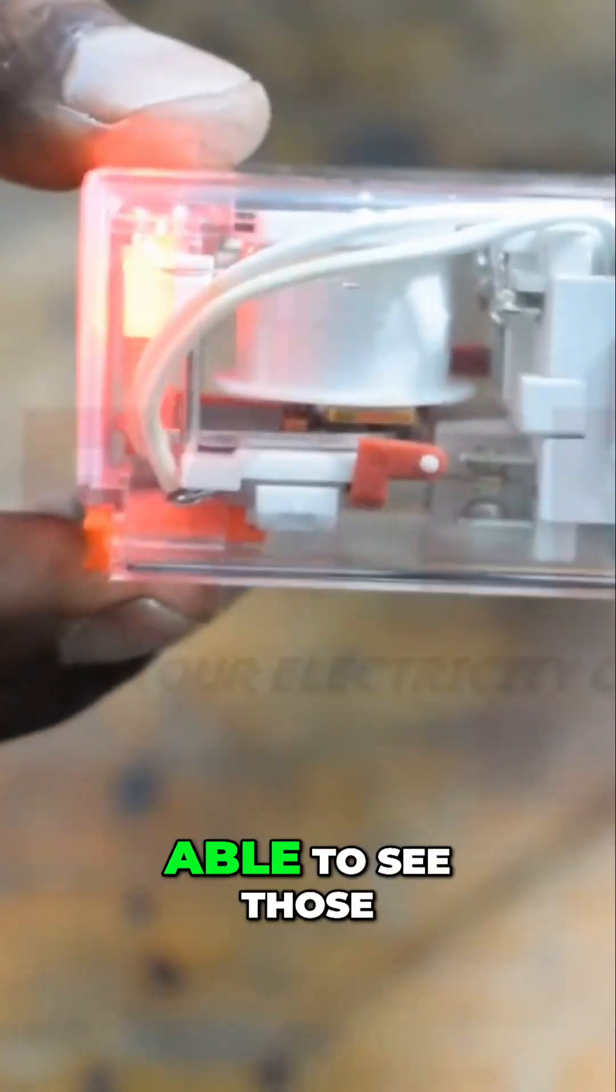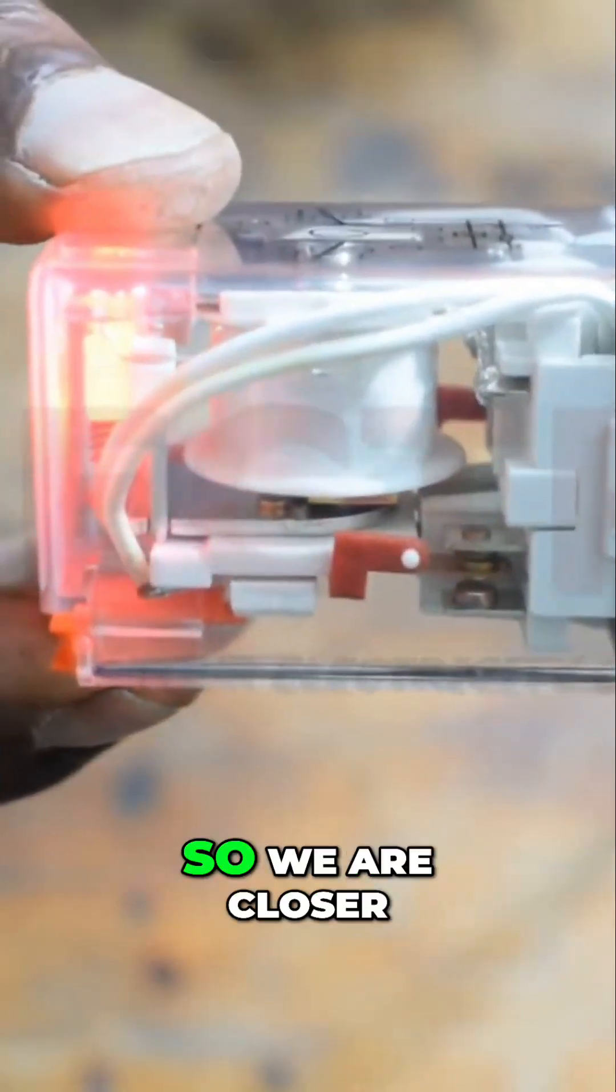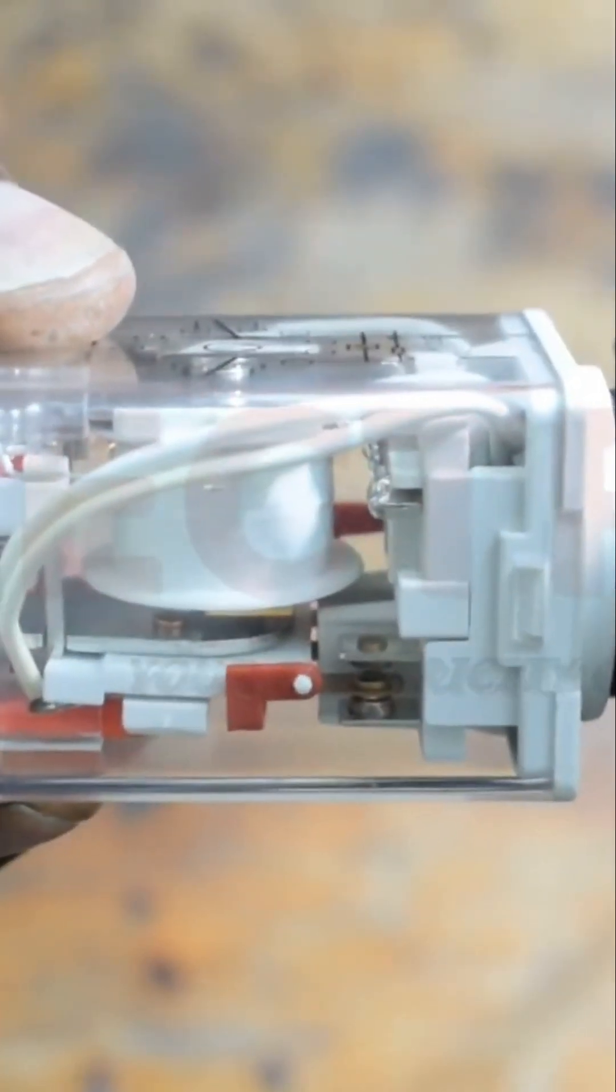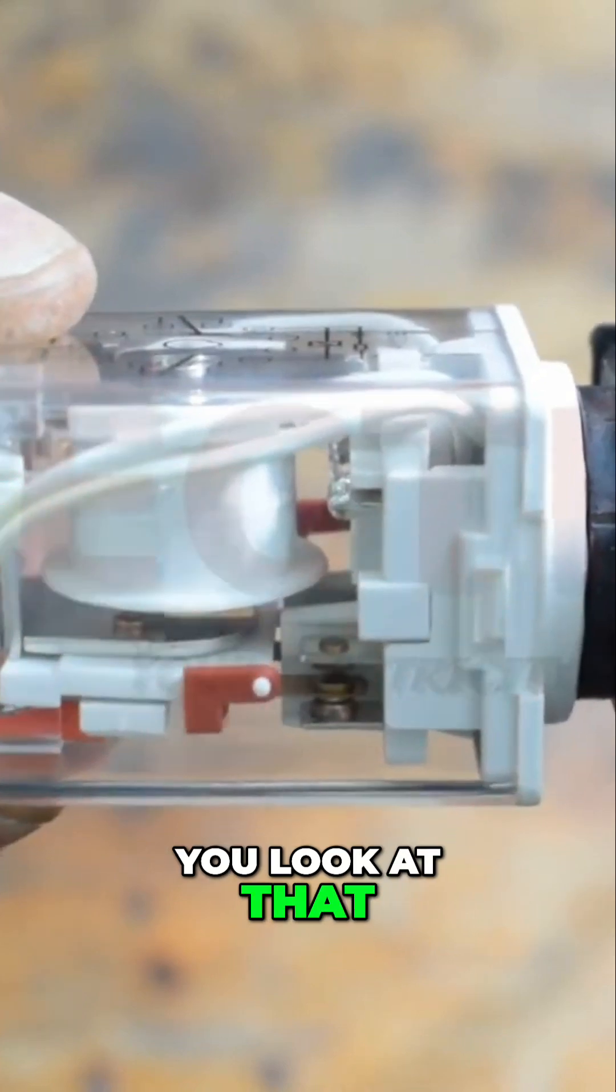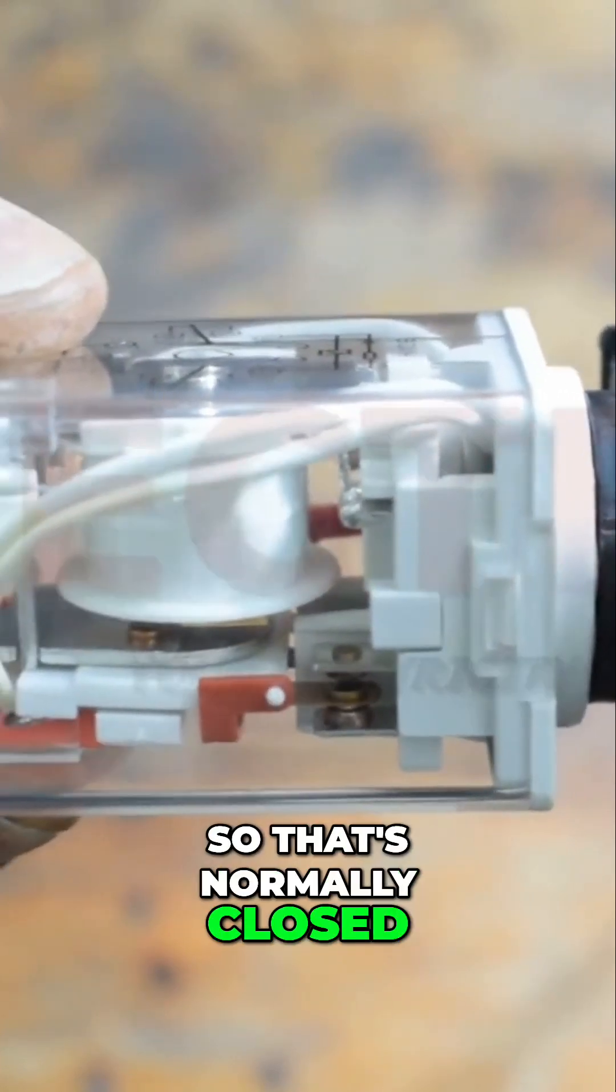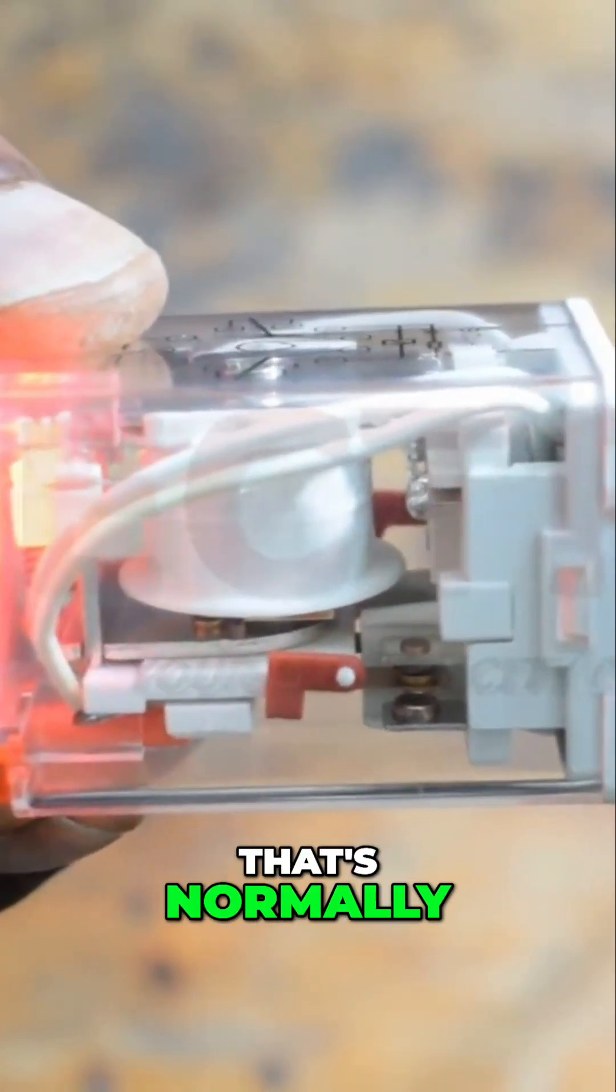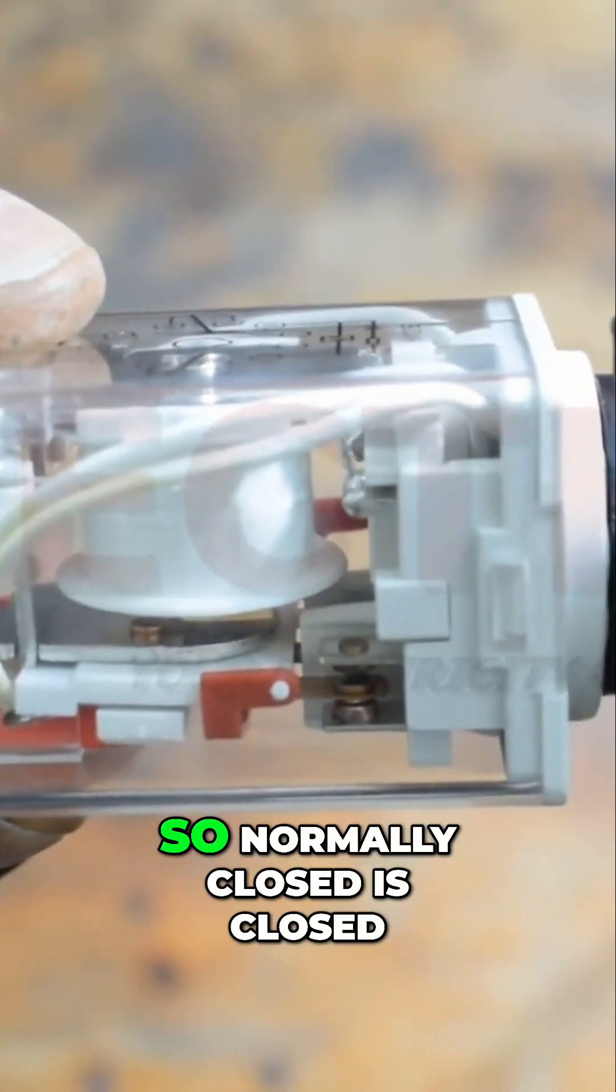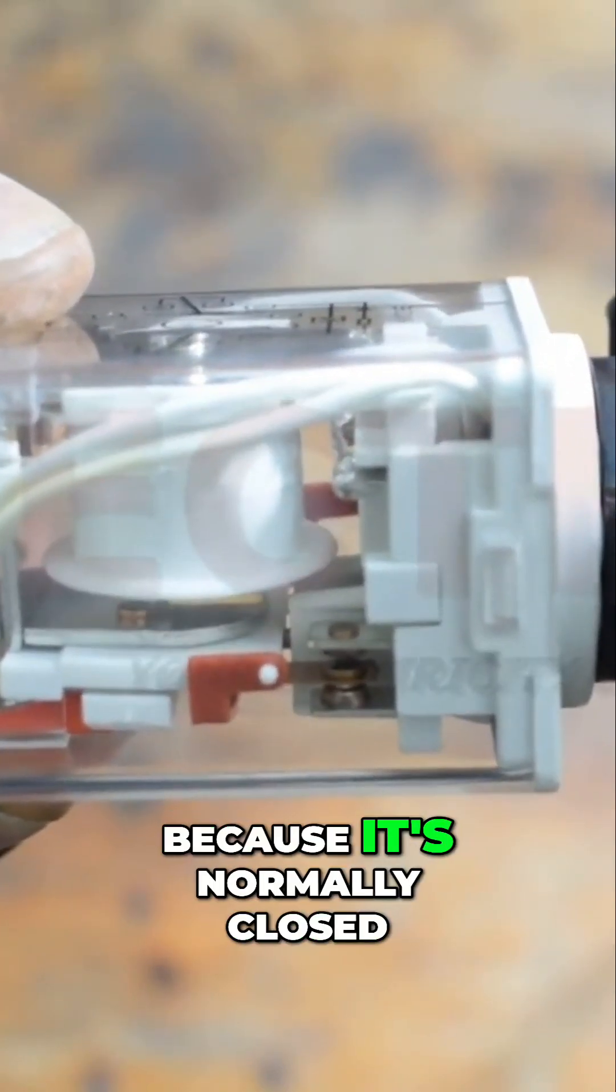So that you are able to see those contacts move. We are closer, we want to see that contact move. You look at that, so that's normally closed. Currently now it's off, so normally closed is closed because it's normally closed.